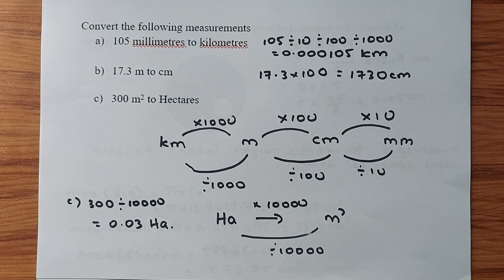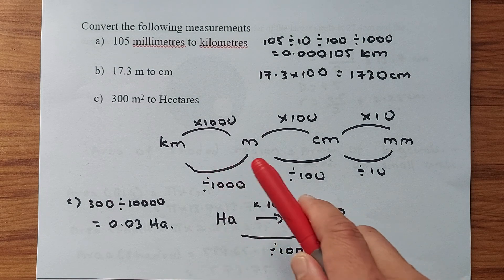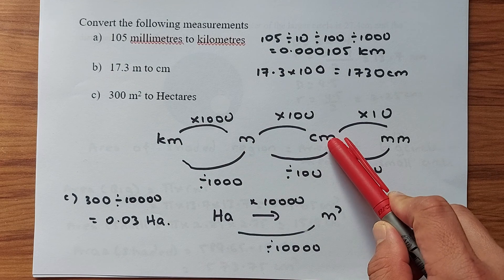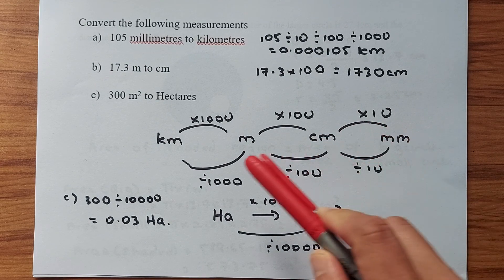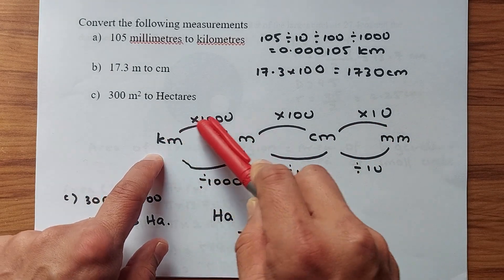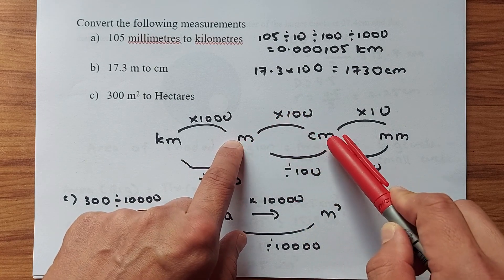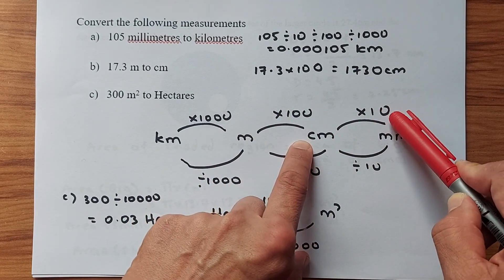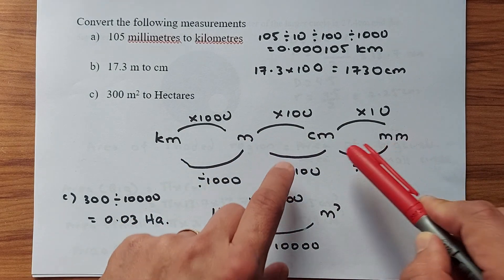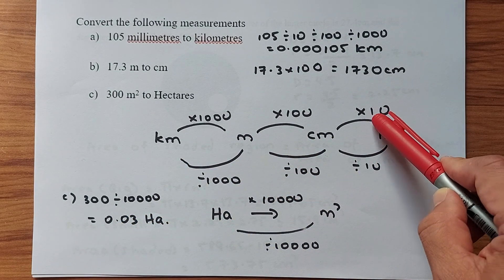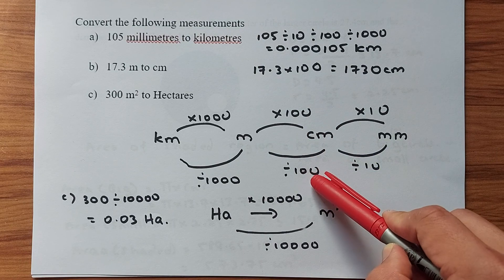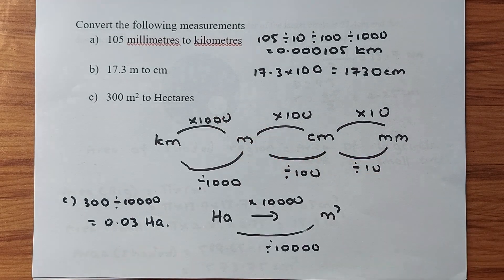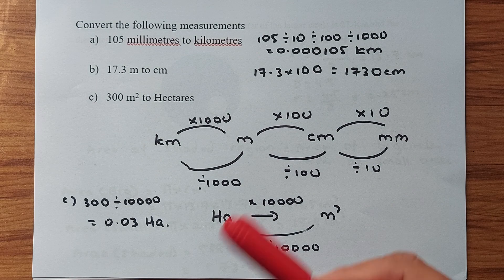The first question is: convert 105 millimeters to kilometers. Here is a good diagram to know — from kilometers to meters to centimeters to millimeters. To convert kilometers to meters you multiply by 1000, meters to centimeters multiply by 100, centimeters to millimeters multiply by 10. Going the other way, you reverse: divide by 10, divide by 100, divide by 1000.